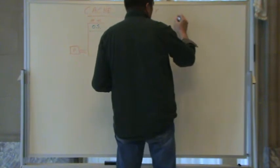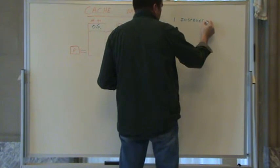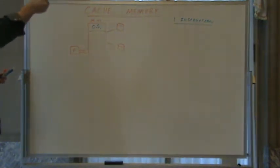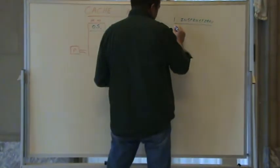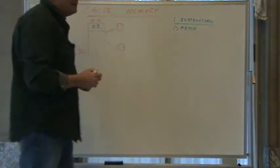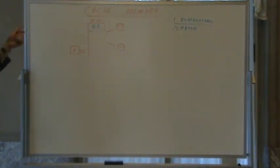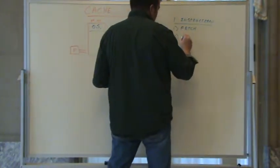When running an instruction, the processor first has to go out to the memory of the executable and bring the instruction in — this is called the fetch step. The second step is to decode the instruction: now that we have it in a register where electricity can flow through, we know whether it's an add instruction, a copy instruction, and so on.